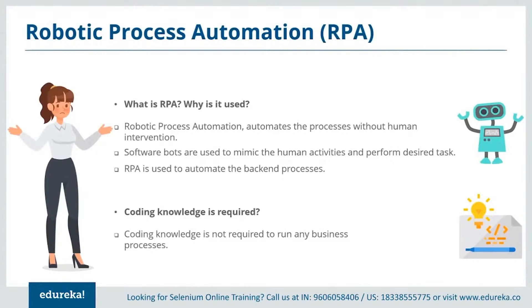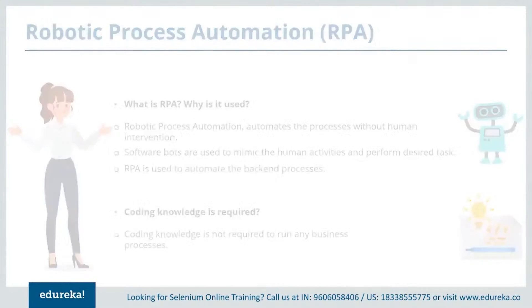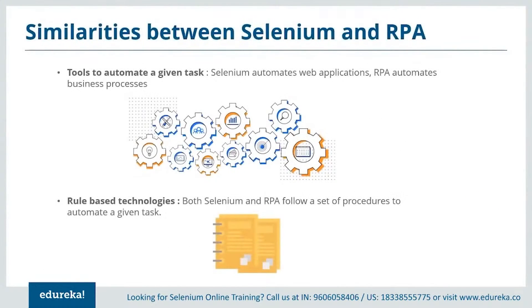Organizations worldwide are transforming to RPA because of its various advantages. Now let's take a look at the similarities between Selenium and RPA. Both are automation tools used to automate a task — Selenium automates web applications and RPA automates business processes. Both these tools are rule-based, meaning they follow a set of procedures to automate any given task.